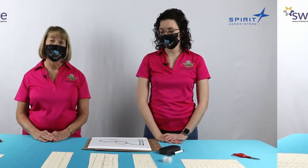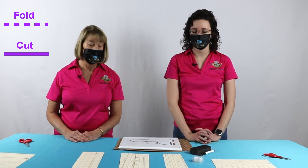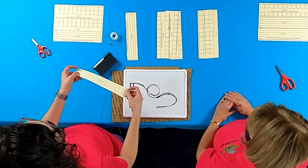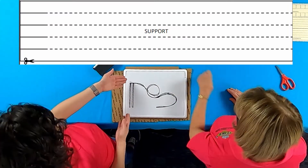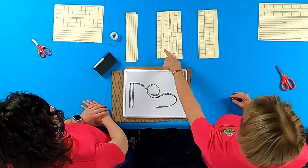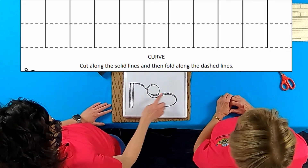Now that we have designed our roller coaster and planned it out, it's time to build it. We've provided a template that we'll be using today, and you can use that same template to build yours at home. The template has dashed lines and solid lines — you're going to fold on the dashed lines and cut on the solid lines. For example, this is a support piece that we have cut out, and you'll fold along the dashed lines and it will represent the supports on our roller coaster. We also have hill, loop, and curve pieces, and all three sections will come together to complete our final roller coaster.